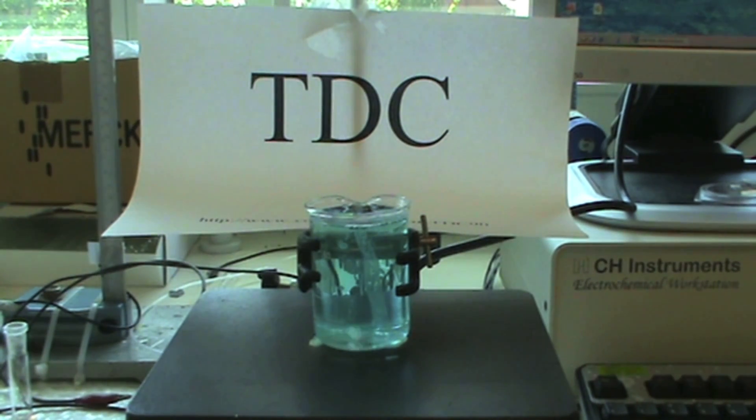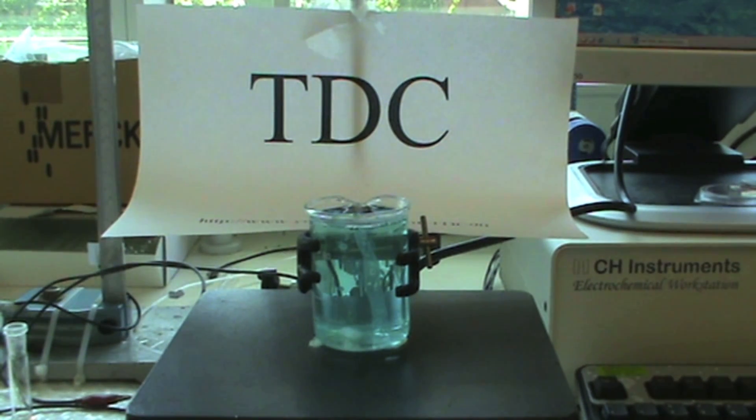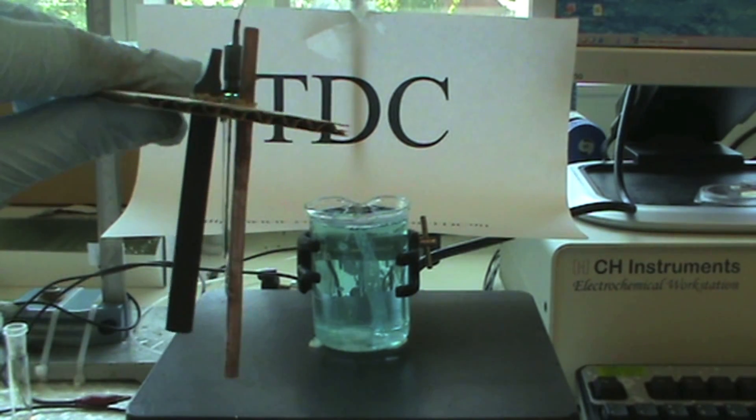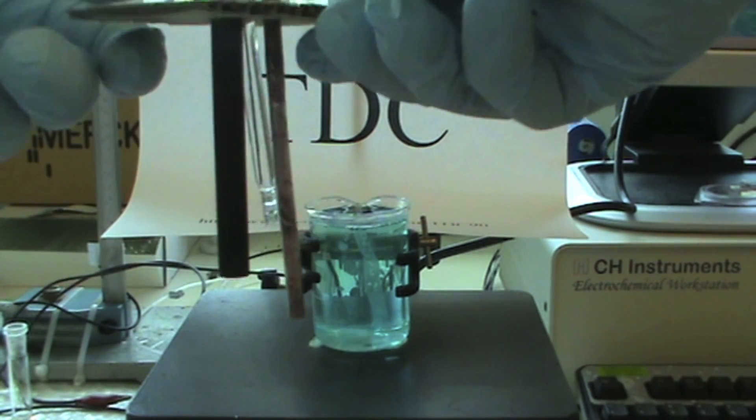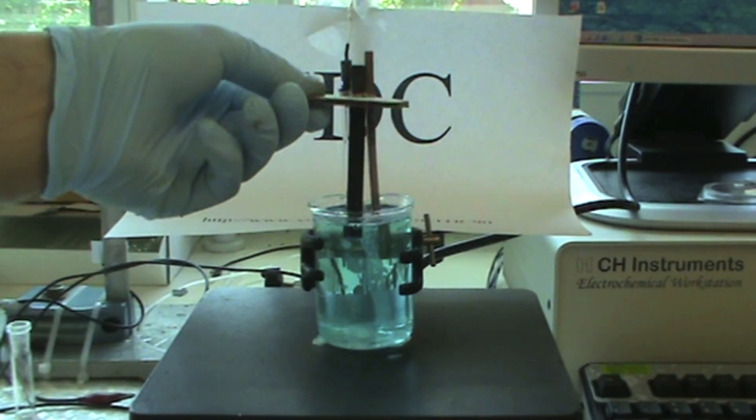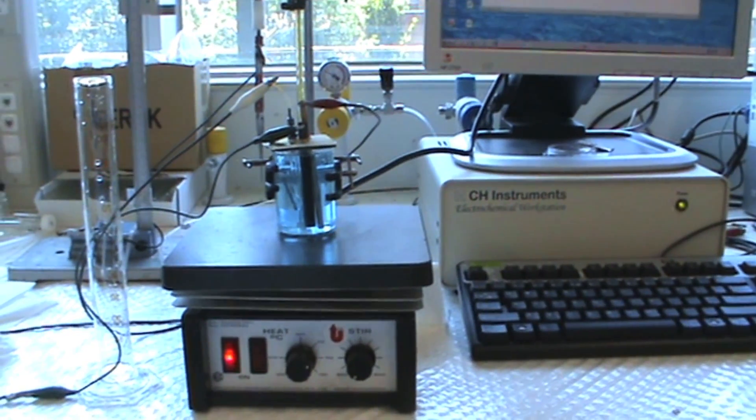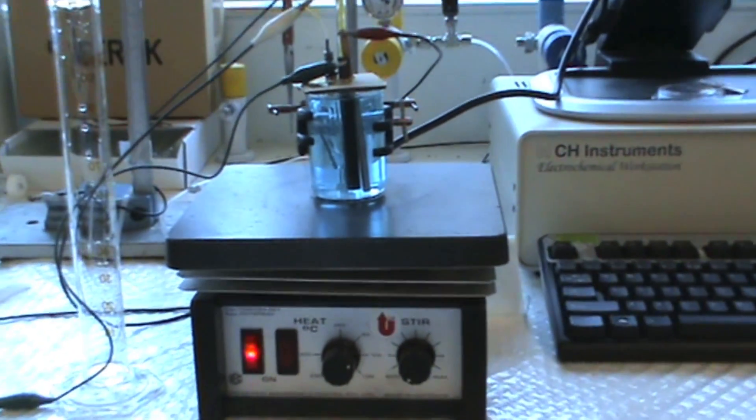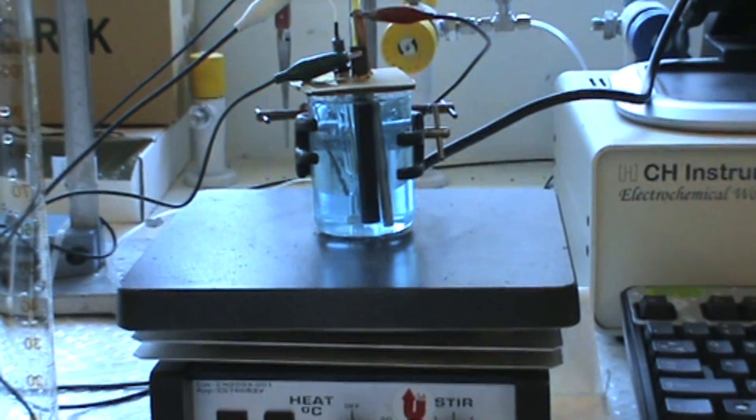After that, we connect the usual electrodes in place to the electrochemical potentiostat, along with the electrodeposition parameters, just like in the previous videos. Keeping the temperature of the bath constant at 60 degrees Celsius, start the electrodeposition.